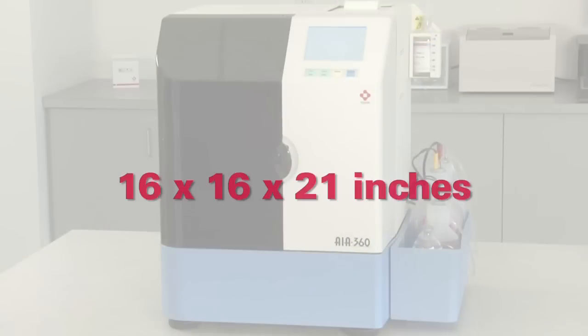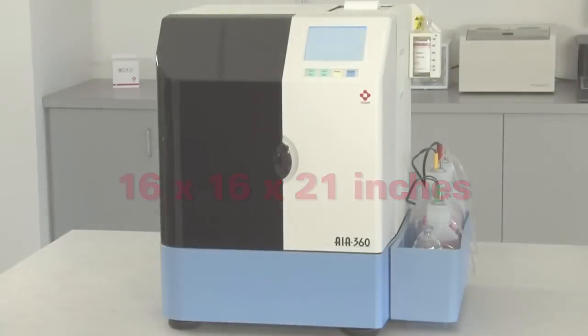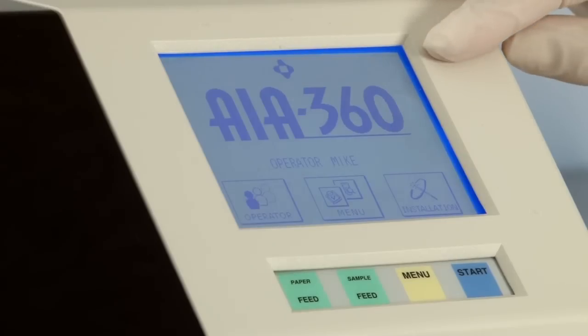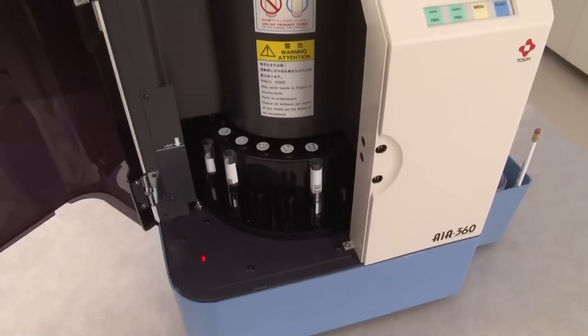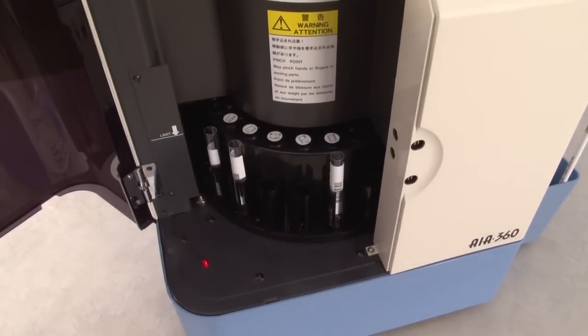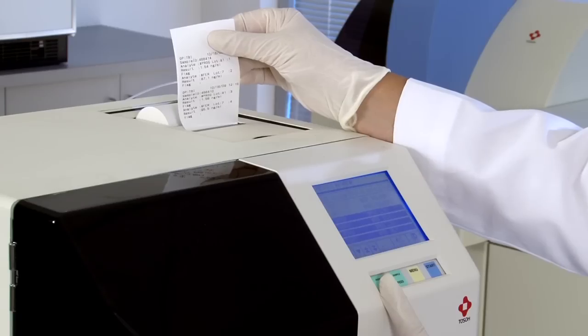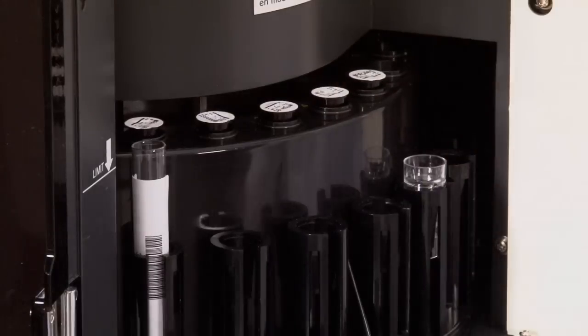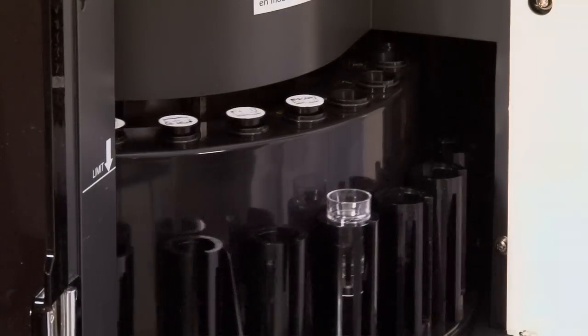Standing a slim 16 by 16 by 21 inches, the AIA360 is ideal for small-volume hospital labs, physician's office laboratories, cardiac and specialty testing, as well as a backup to larger TOSO analyzers.